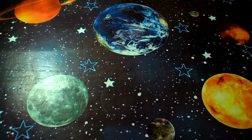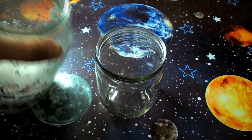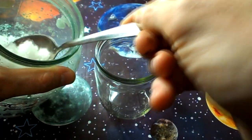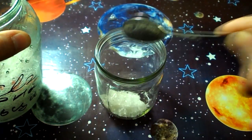Now let's prepare a second mixture. One tablespoon of calcium chloride, mix it with half a liter of hot water.